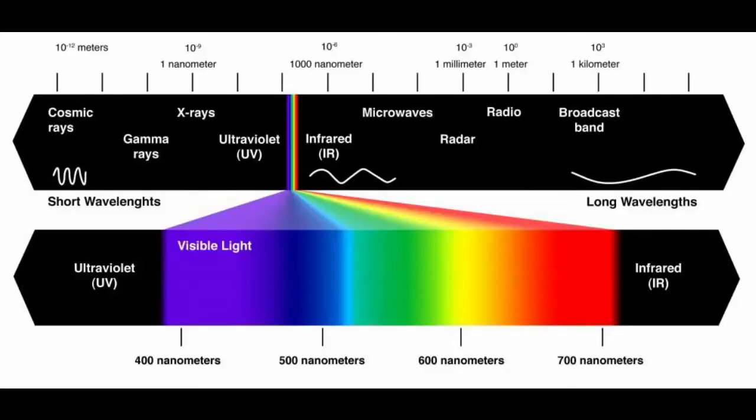Now when I say light, you're probably thinking of light as in what your eyes can see, but the light which our eyes are sensitive to is only a sliver of the electromagnetic spectrum, a term used by scientists to describe the entire range of wavelengths that exist.